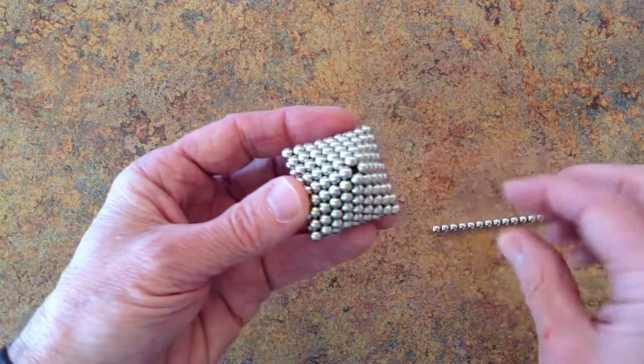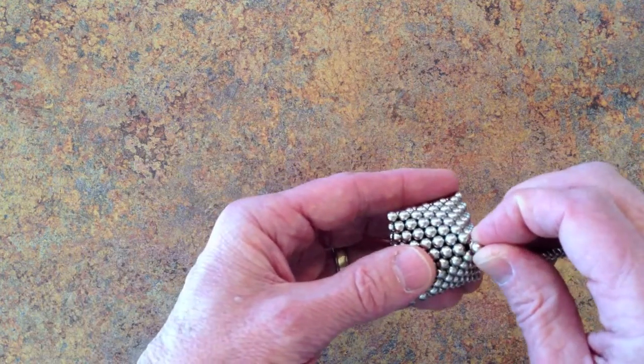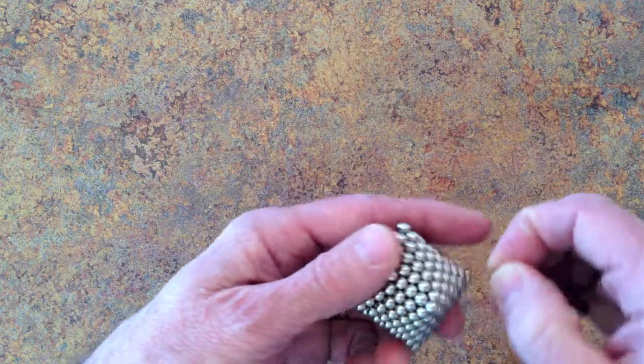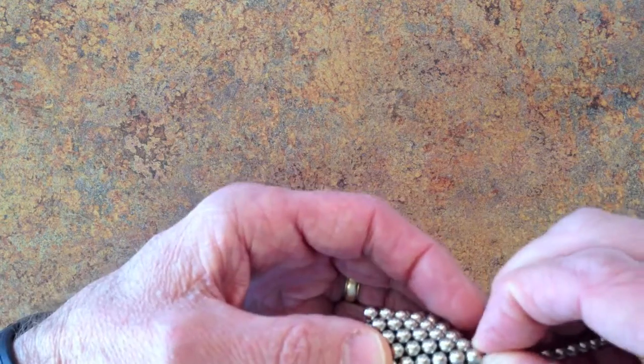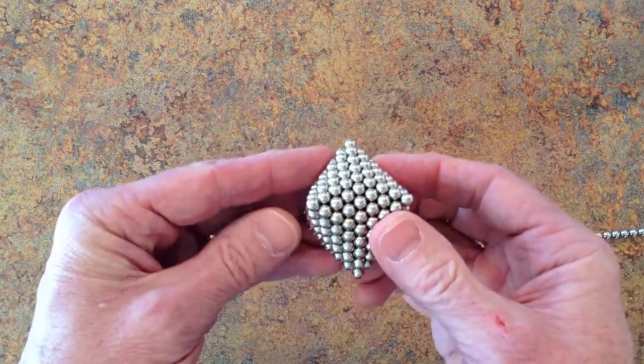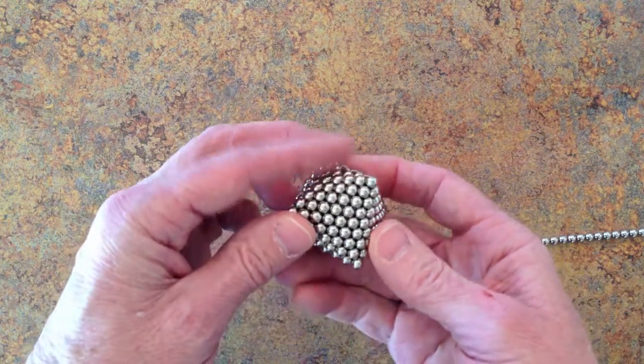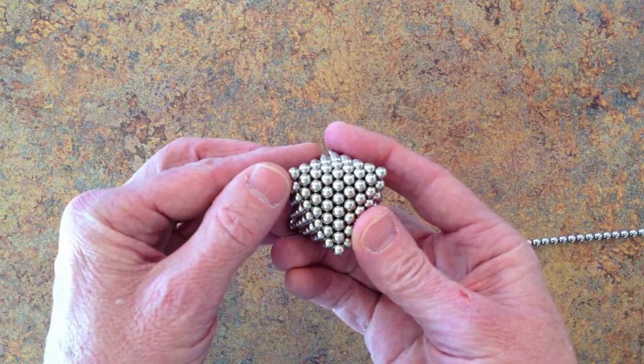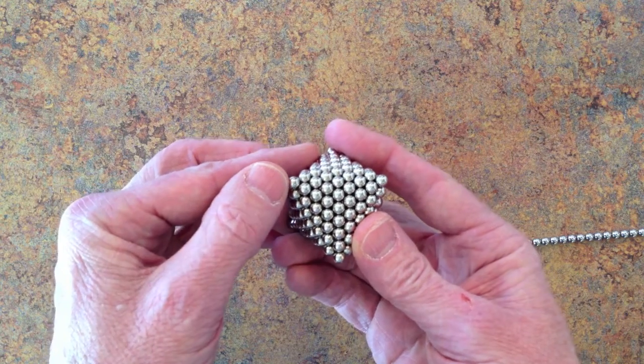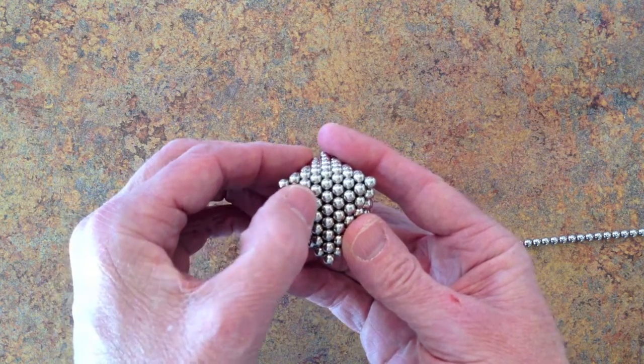And then you simply add a magnet to the top and one to the bottom, and you're done. And that is the octahedron of circumradius 5: 1, 2, 3, 4, 5.